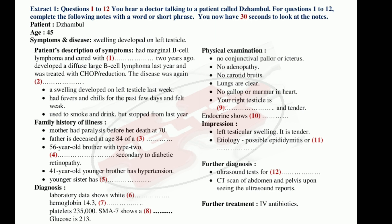Your previous illness and surgeries? I had B-cell lymphoma and diffuse large cell lymphoma. I had a splenectomy. Are you taking any medications? No, Doctor. Are you allergic to any medications? No, Doctor. May I know your family history of illness? Well, my mother had paralysis before she died at 70. My father is deceased at the age of 84 of a head and neck cancer. My 56-year-old brother has type 2 diabetes and blindness secondary to diabetic retinopathy. My 41-year-old younger brother has hypertension and my younger sister has thyroid disease.